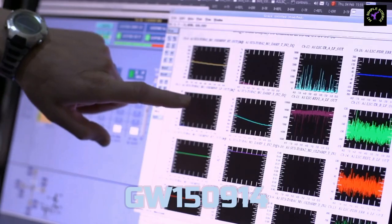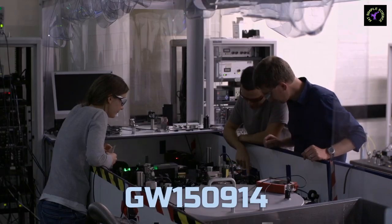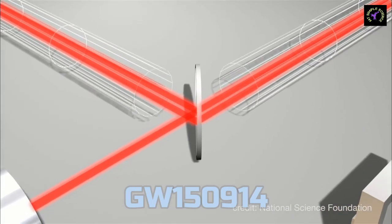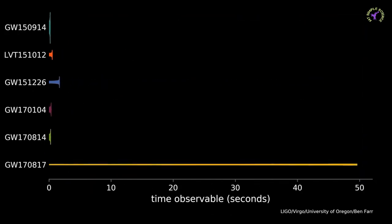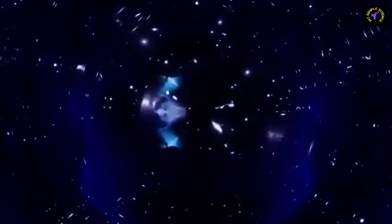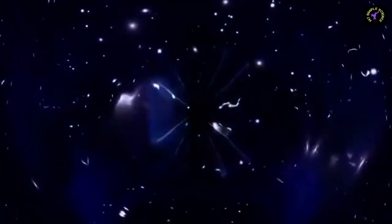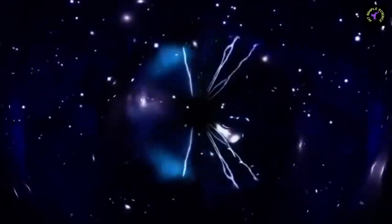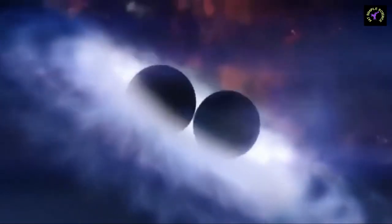GW-150914 is the name of the first observed gravitational wave. GW stands for gravitational waves and the subsequent digits show the date they were observed. These waves emerged from a binary black hole system when they were fusing together. This object was 13.4 billion light years away from us. This means they fused together 13.4 billion years ago, and the gravitational waves emerged from that incident reached Earth in 2015.